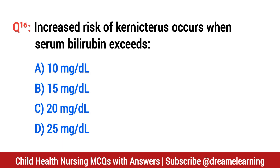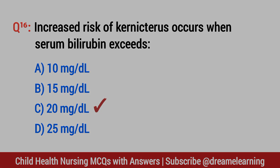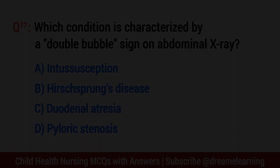Question number 16. Increased risk of kernicterus occurs when serum bilirubin exceeds? The right option is C: 20 mg per dL.